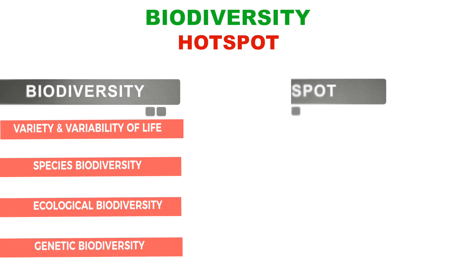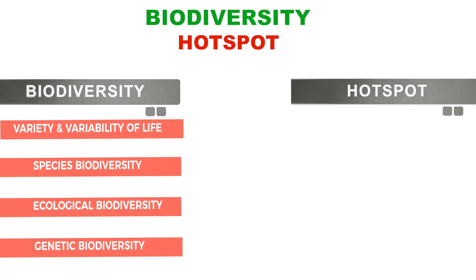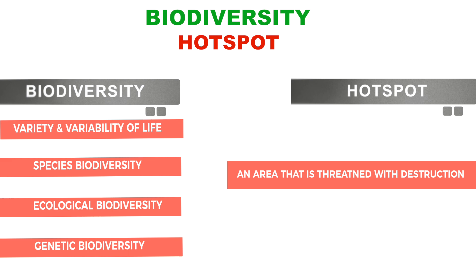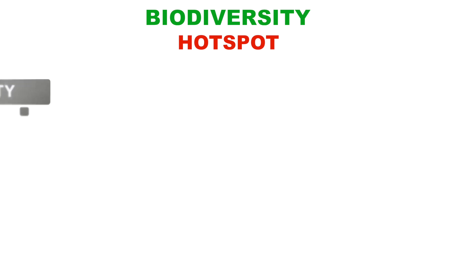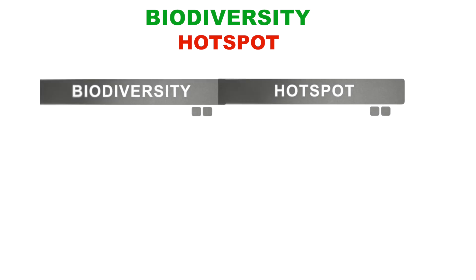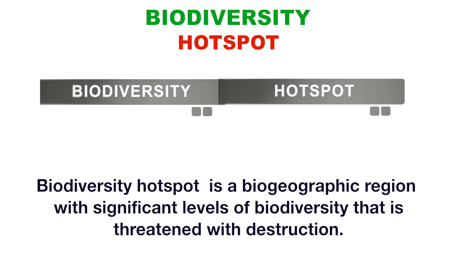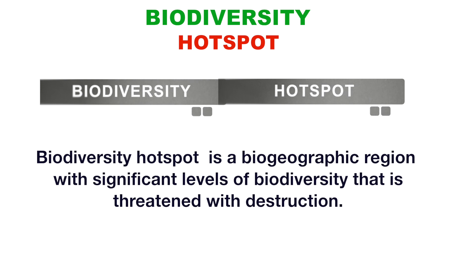On the other hand, 'hotspot' literally means a place of significant activity, danger, violence, or disturbance. Scientifically, a hotspot is a place or area that is vulnerable or threatened with destruction. Combining both terms, a biodiversity hotspot is a biogeographic region with significant levels of biodiversity that is threatened with destruction.